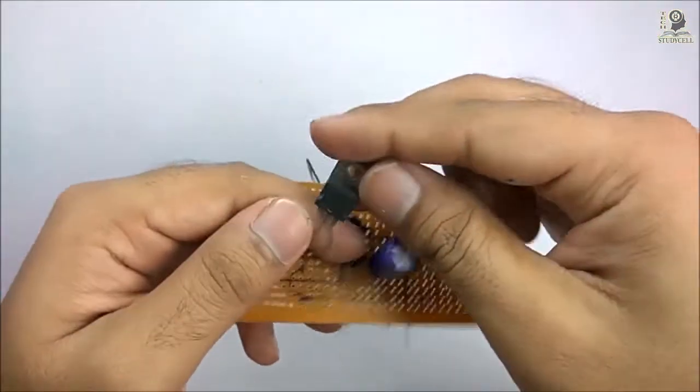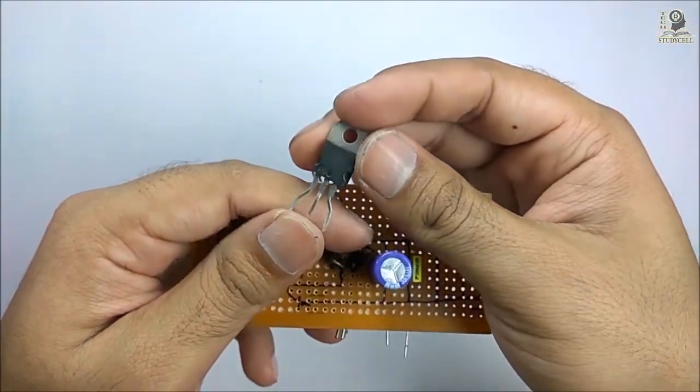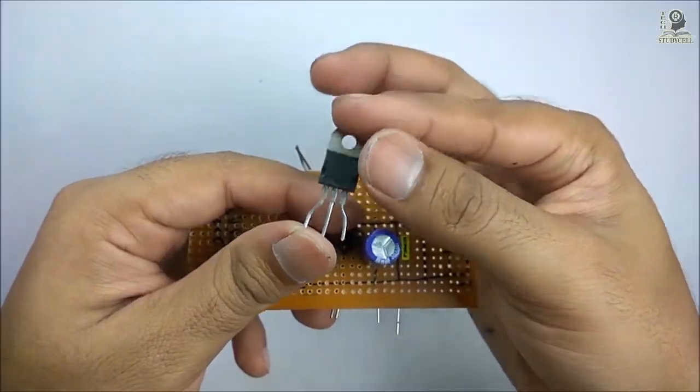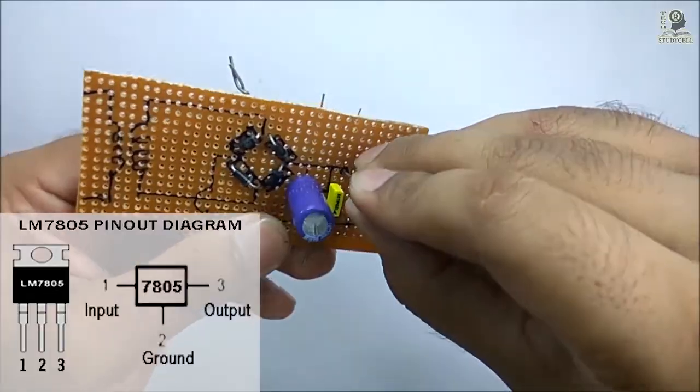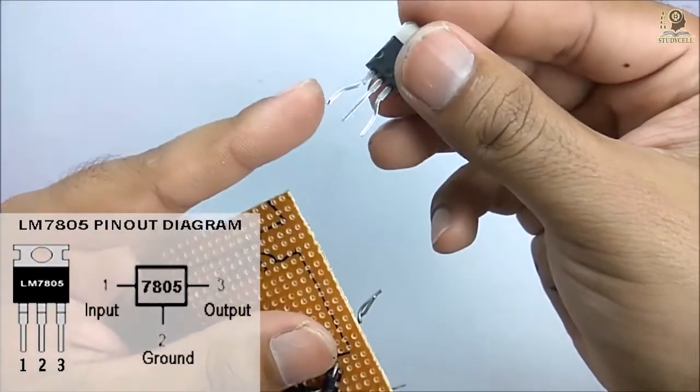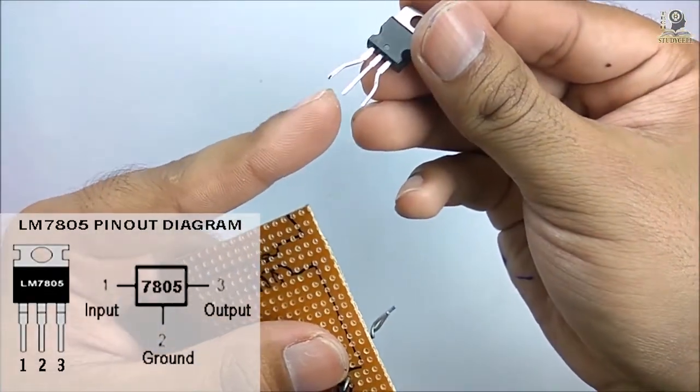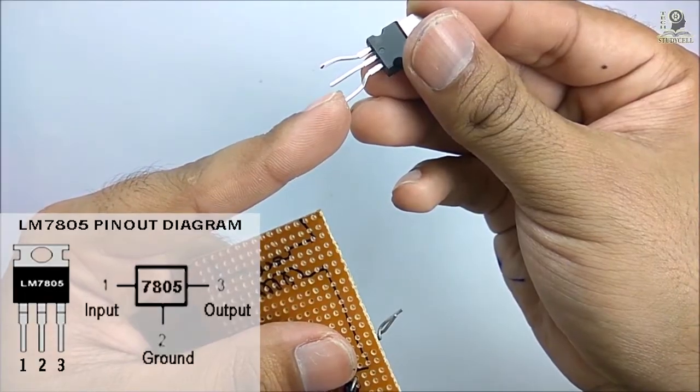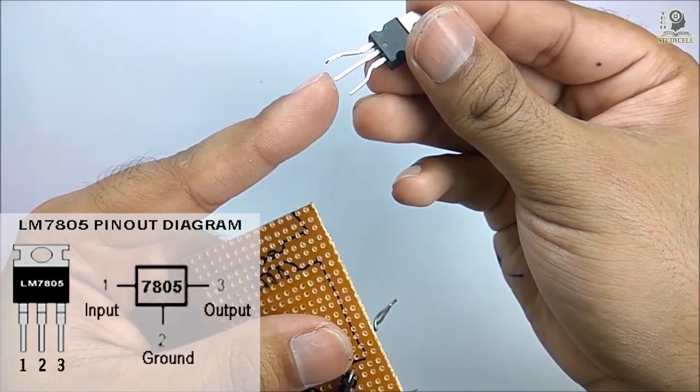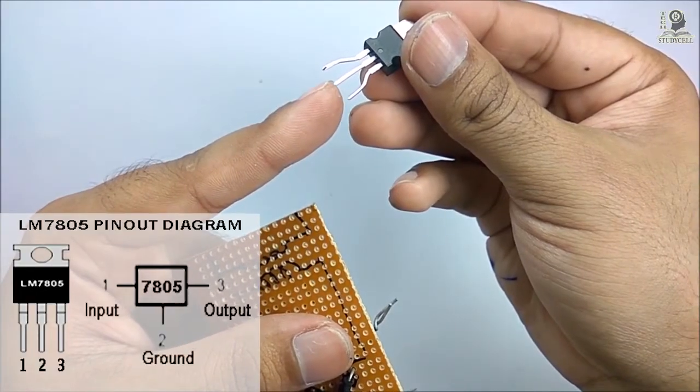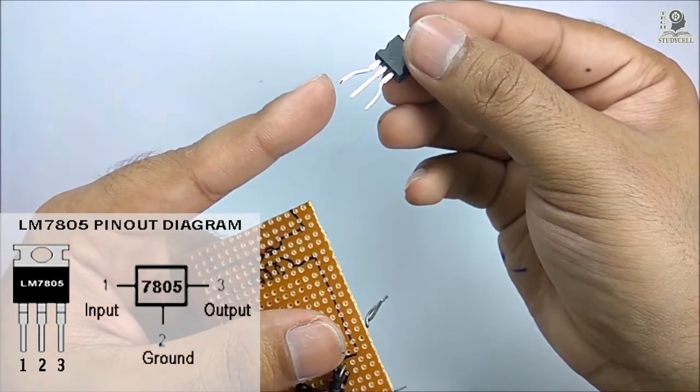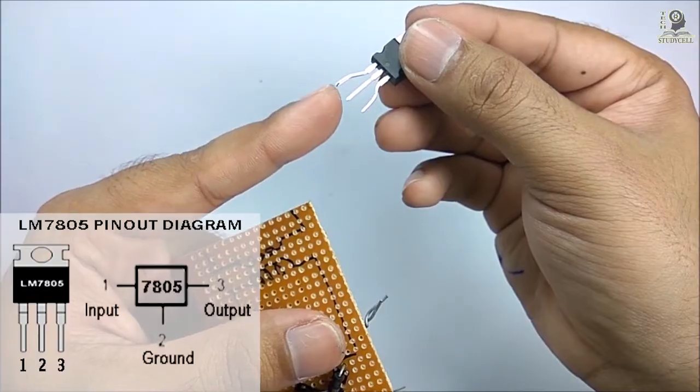After that, I will place this 7805 IC on this PCB as per the circuit diagram. In this IC, this is the input, this is the ground, and this is the output. We will get the constant 5V output between the output pin and the ground pin, and we will feed the input across the input pin and ground pin.